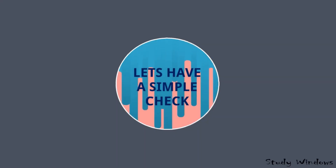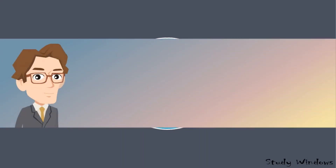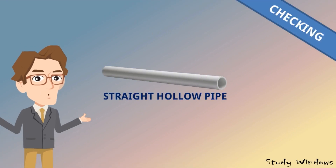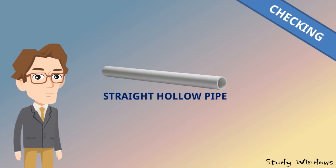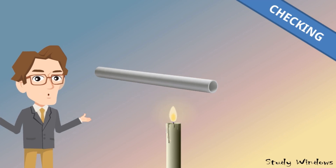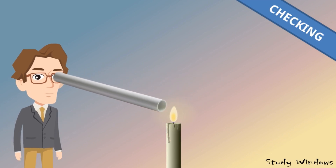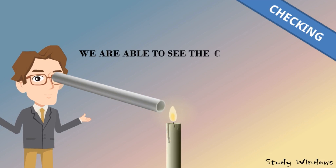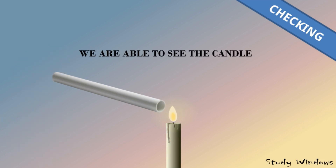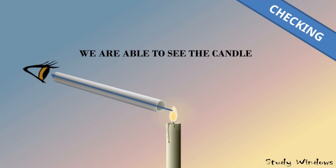Let's do a simple check. We'll take a straight hollow pipe and one burning candle. We'll try to see the candle through the pipe, and we are able to see the candle. This is because light coming from the candle travels through the straight pipe and reaches our eyes.